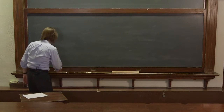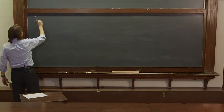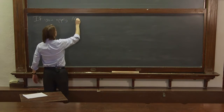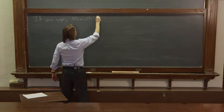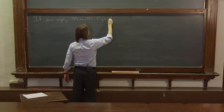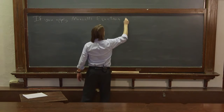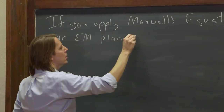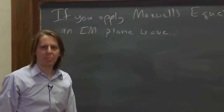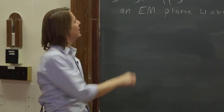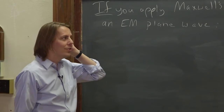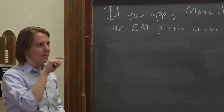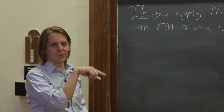If you apply Maxwell's equations to an EM plane wave, you discover some properties of the EM plane wave. We're not going to do it — we're not doing all the detailed field theory. To do it properly, you have to use differential form. For instance, Gauss's law in differential form states that the divergence of the E field is 0.